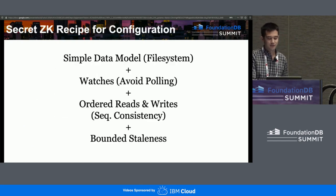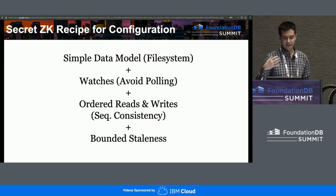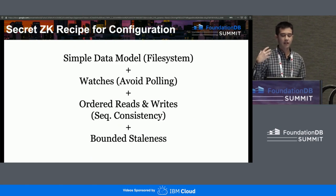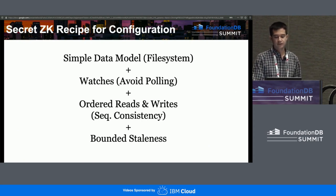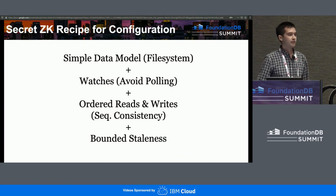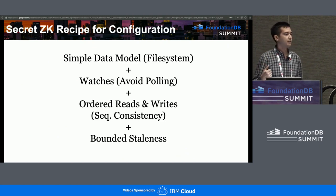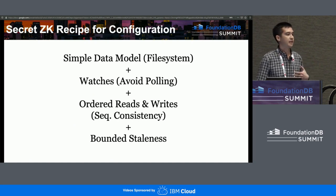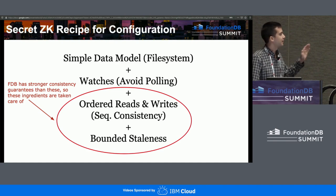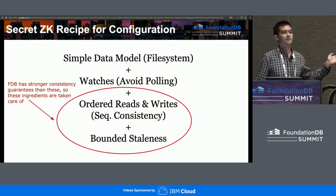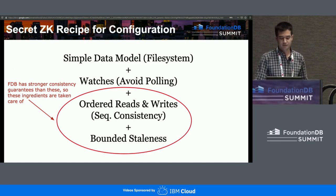Why do people use Zookeeper for storing configuration? There are a few key features it offers. It has a really simple data model that looks like a file system. It gives you watches — we'll talk more about those — which help you avoid polling. And it has very precise semantics about how operations are ordered. This is convenient because FoundationDB actually has stronger semantics than Zookeeper, so we get this for free by building on top of it.